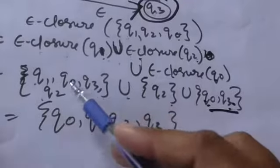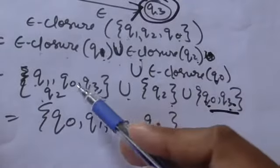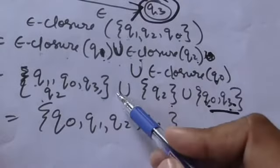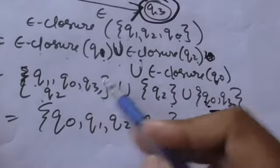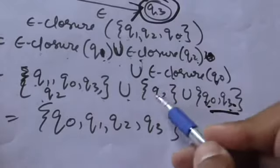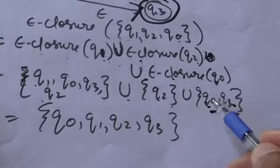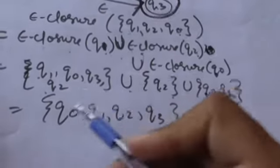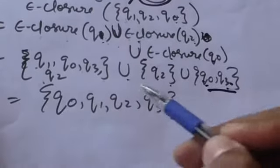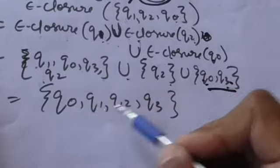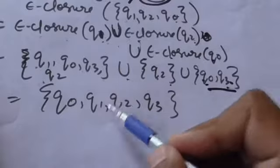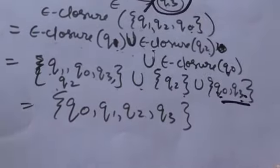Now take the union of all these sets of states. When we take the union of these three sets we will get a set having states q0, q1, q2, and q3.